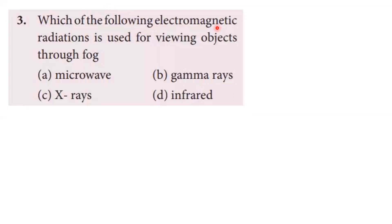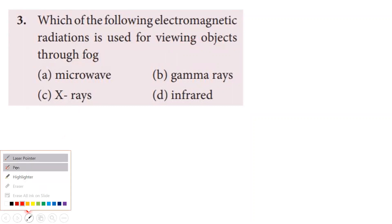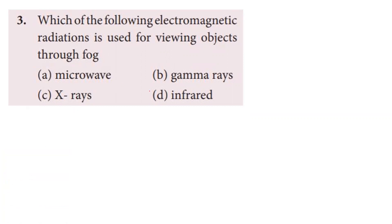Third question: which of the following electromagnetic radiation is used for viewing objects through fog? Looking at the wavelengths — microwave, gamma wave, X-ray, and infrared — infrared has a longer wavelength. The scattering is less than the wavelength, so energy loss is less. Through fog, infrared is used to see objects. The fourth option, infrared, is the correct answer.